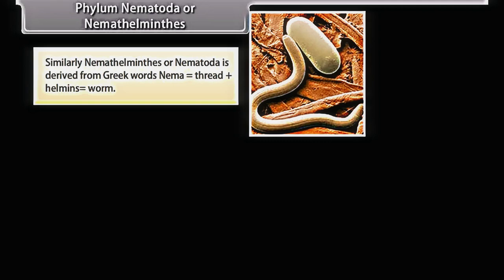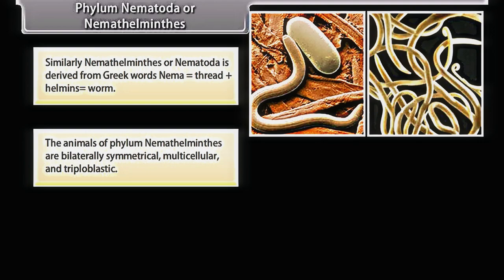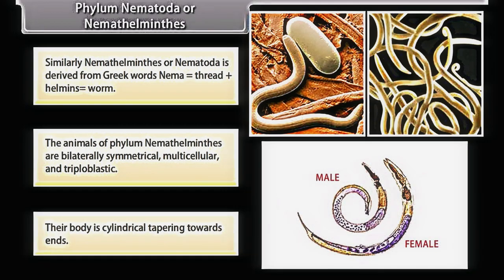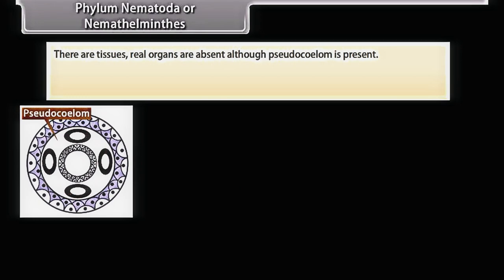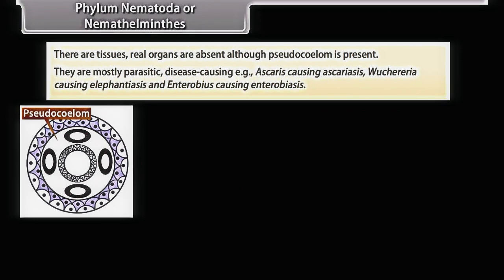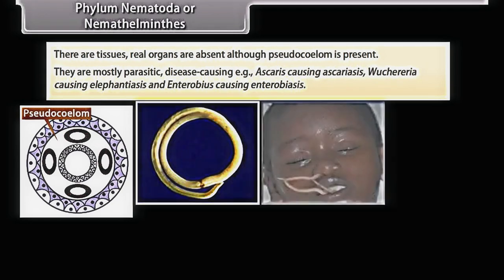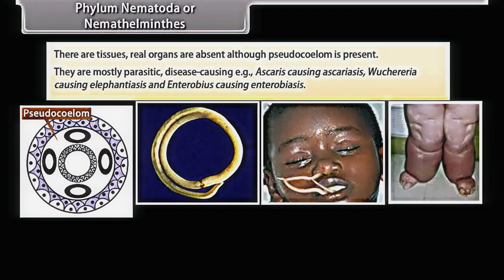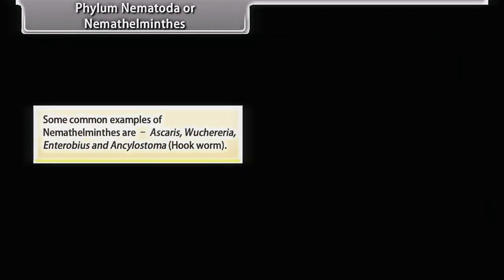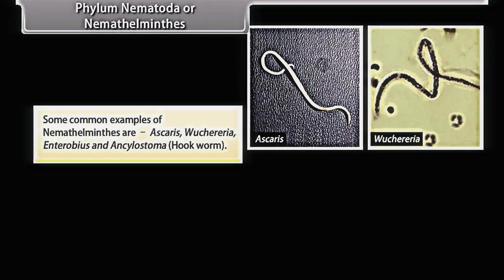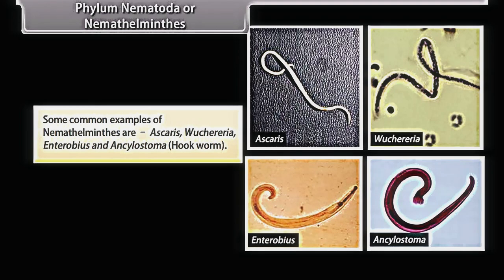Nematoda (Nemathelminthes) is derived from Greek words 'nema' (thread) and 'helminth' (worm). The animals are bilaterally symmetrical, multicellular, and triploblastic, with a cylindrical body tapering towards both ends. There are tissues present but real organs are absent, although pseudocoelom is present. They are mostly parasitic and disease-causing — Ascaris causes ascariasis, Wuchereria causes elephantiasis, and Enterobius causes enterobiasis. Common examples are Ascaris, Wuchereria, Enterobius, and Ancylostoma (hookworm).